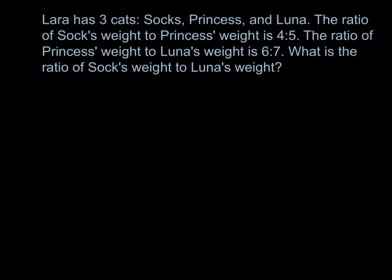Okay, let's go over the first problem. It says Lara has three cats: Socks, Princess, and Luna. The ratio of Socks' weight to Princess's weight is 4 to 5. The ratio of Princess's weight to Luna's weight is 6 to 7. What is the ratio of Socks' weight to Luna's weight? So we're going to write out our ratios: 4 to 5, and we always want to make sure we label — that's Socks and Princess — and then we also have 6 to 7, and that's Princess to Luna.